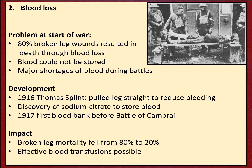The impact of these developments is quite marked. Broken leg mortality fell from 80% down to 20% with use of the Thomas splint. From the end of 1917 onwards, effective blood transfusions became increasingly possible at casualty clearing stations rather than back at base hospitals.